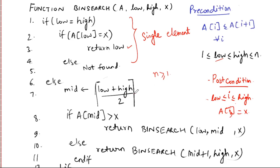Based on the mid value and the query asked, we can determine whether to move to the lower half or the higher half. If the mid value is greater than the query, it should be on the lower half, so we search from low to mid, passing query x. Otherwise, it will be searched on the higher half, from mid plus 1 to high. This is how the binary search pseudo code is written. Now let's look at the correctness of this algorithm.